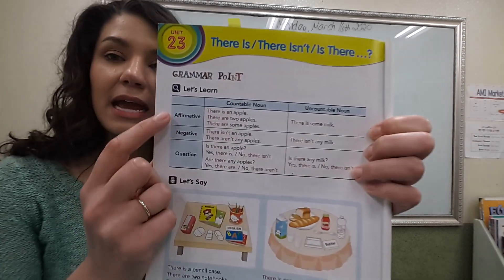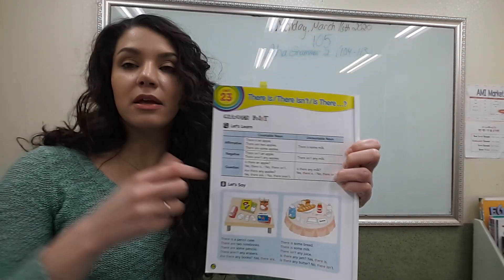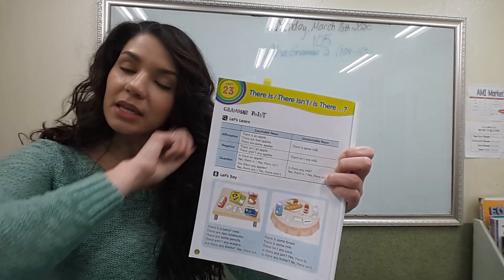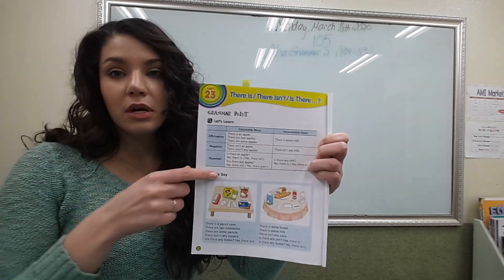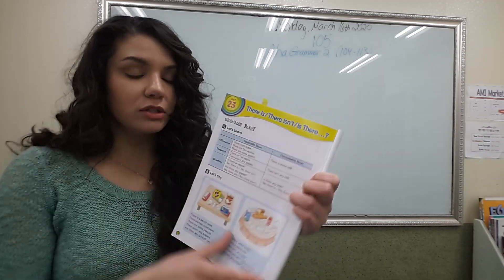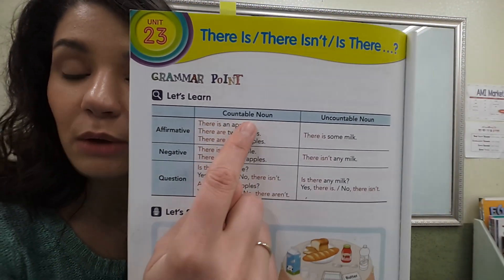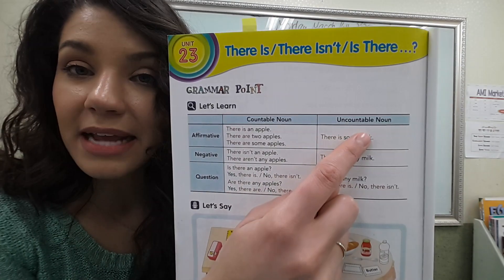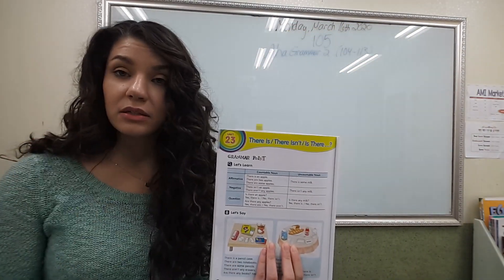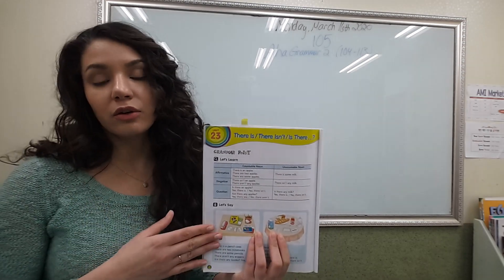Affirmative means yes, negative means no, question means question. There are different ways to use 'there is,' 'there isn't,' and 'is there,' and we need to pay attention to whether something is countable or non-countable — can you count something or not? We covered this earlier in the AHA Grammar 2 book.